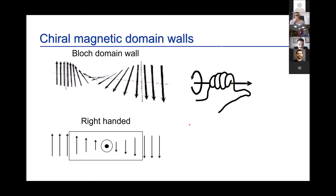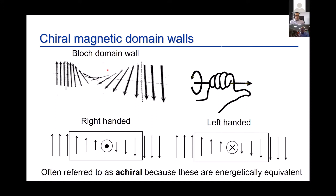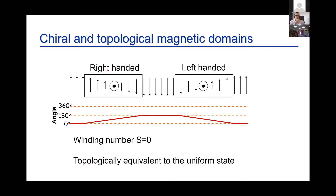Magnetic domain walls are inherently chiral. If you take the simplest wall — a Bloch wall — and go from up to down as you wind through it, the center spin points out going from left to right. You can view this as a right-handed domain wall as the magnetization precesses. Equivalently, you can have a left-handed Bloch domain wall where the spins precess in the opposite direction. These walls are often referred to as achiral because they are energetically equivalent, but they do have an inherent chirality.